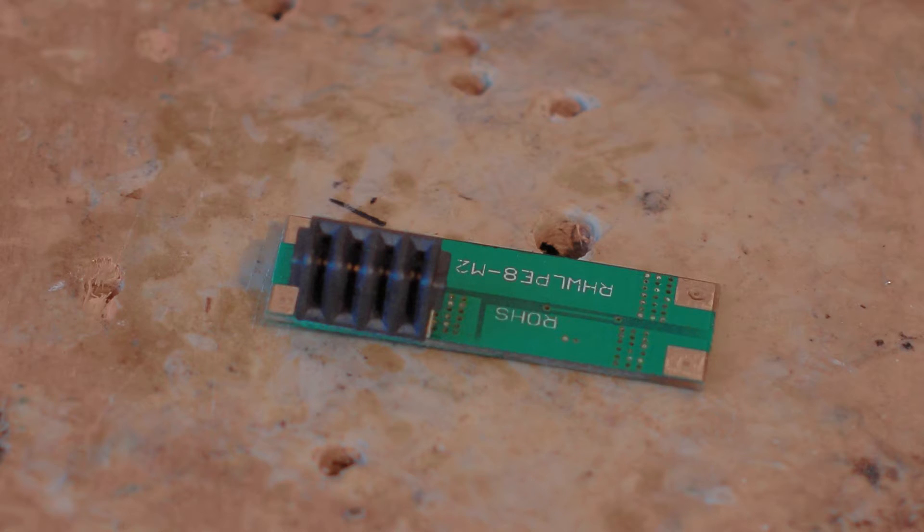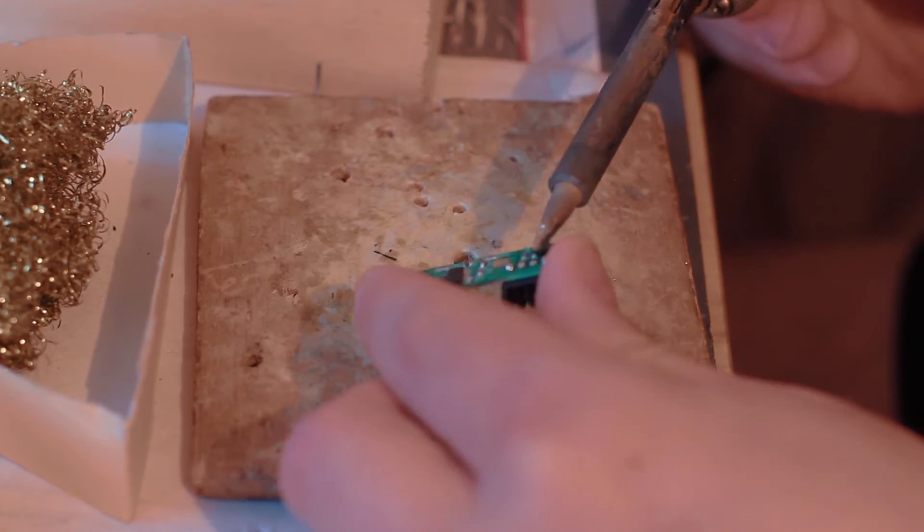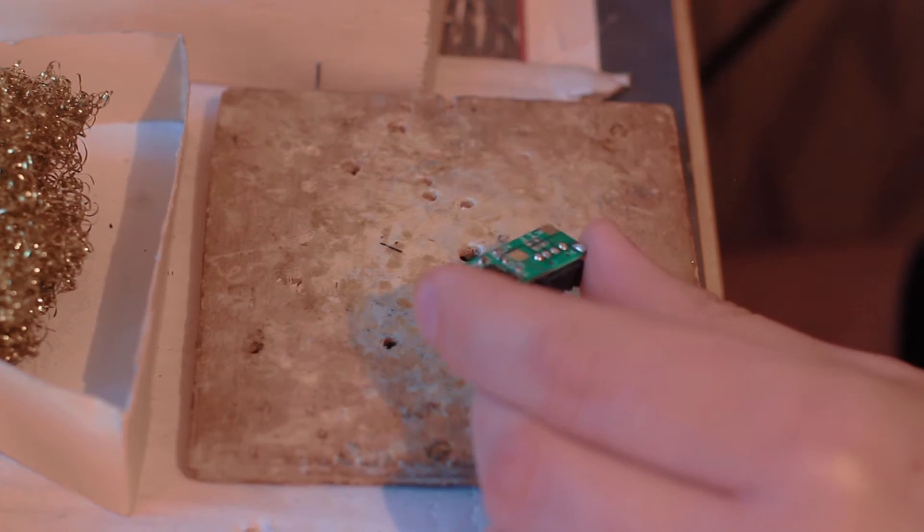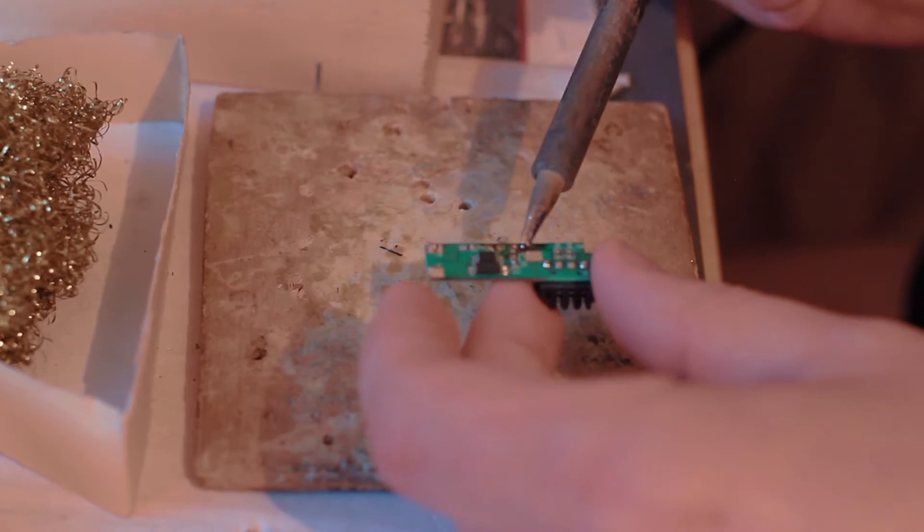The PCB has some SMD elements, so we need to desolder them. I use a soldering iron set to 350°C and use a lot of solder tin. Be sure that you clean all of the short circuits using soldering paste.